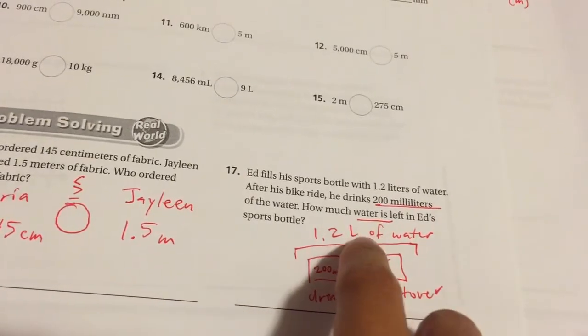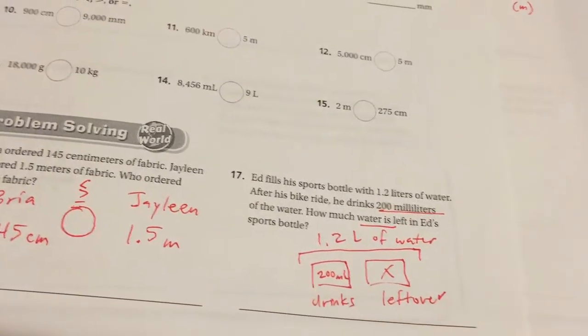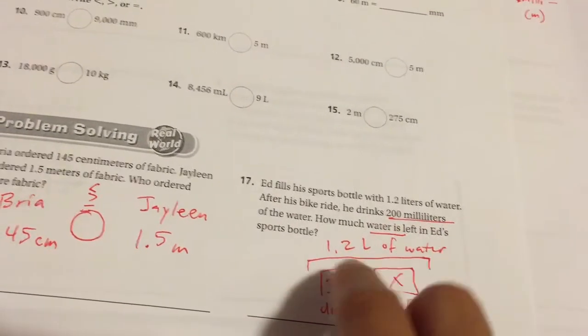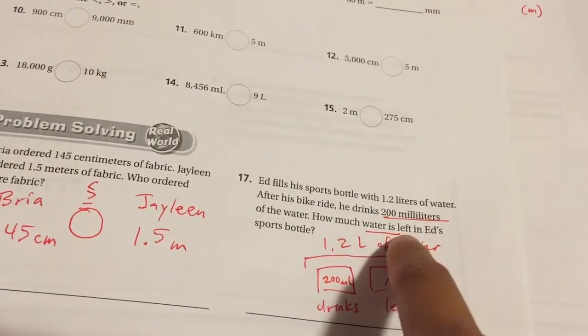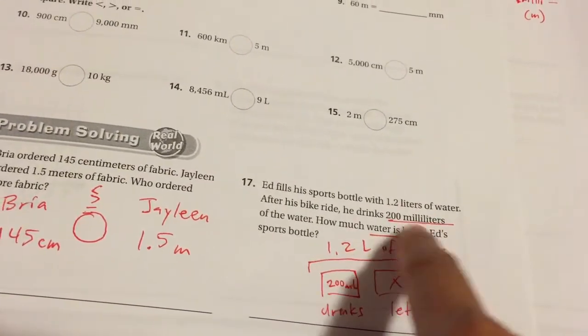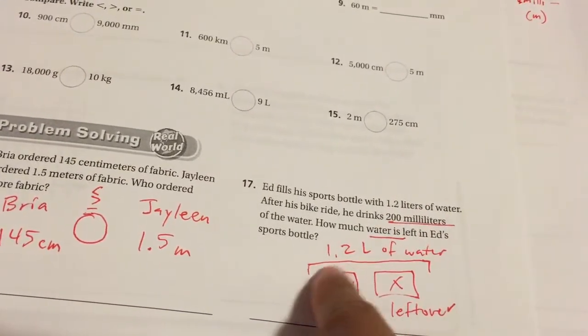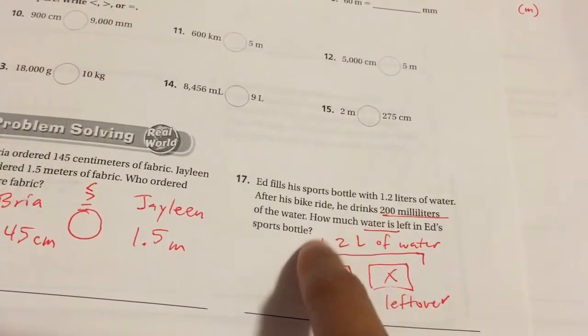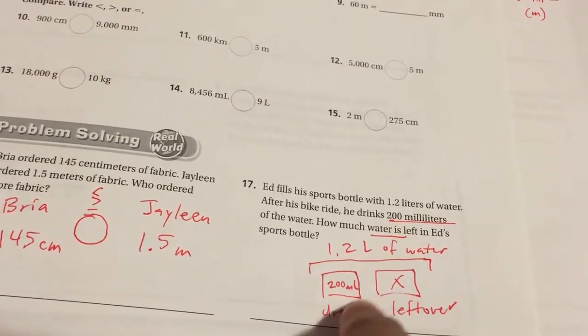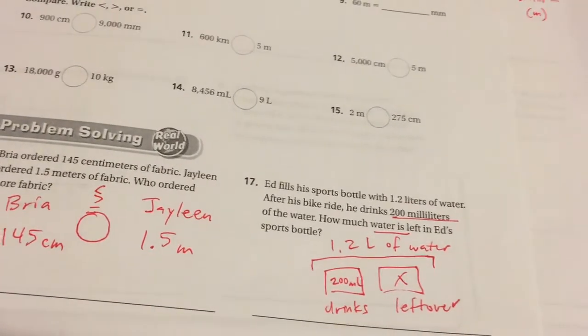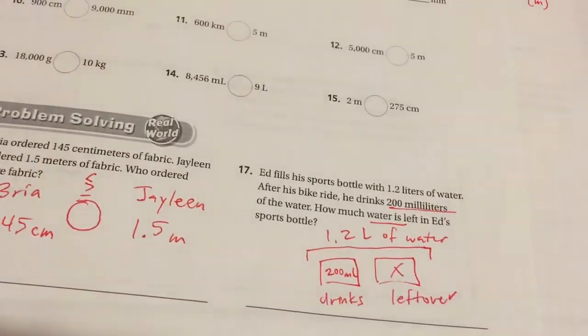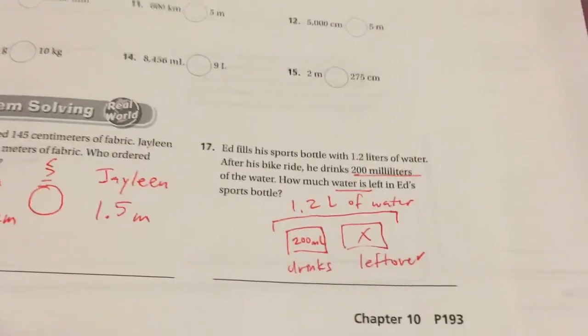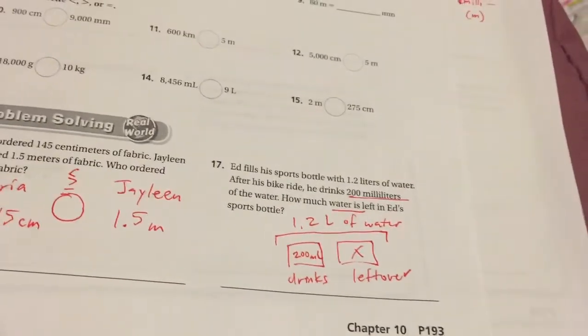The only reason why you can't do that quite yet is because one is liters and one is milliliters. You have two options. You could change 1.2 liters into milliliters, and then subtract this amount of milliliters by this amount, or you could change 200 milliliters into liters, and subtract 1.2 liters from the conversion. This one is going to look very similar to what we did for 10-4, in the sense that you have to convert them to the same standard before doing the operation. Good luck!